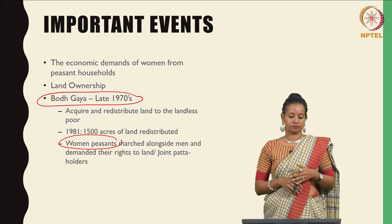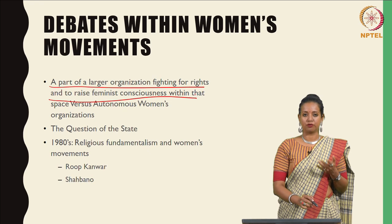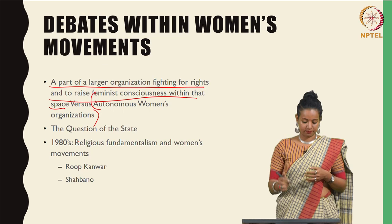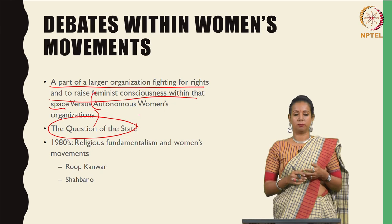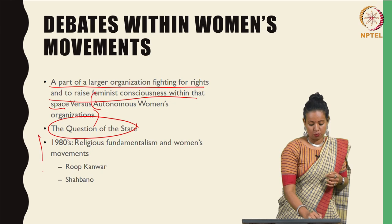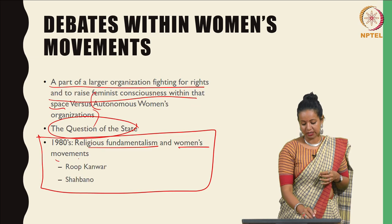There were also concurrent debates within the feminist movement in India about whether it was better to be part of a larger organization fighting for rights and raise feminist consciousness within that space, or to be an autonomous women's organization fighting solely for women's rights. The question of the state continued to be paramount to the demands of women, because often the state was something that movements were critical of, but at the same time appeals continued to be made to it. One set of issues that brought this fundamental tension to the fore was religious fundamentalism and women's movements.